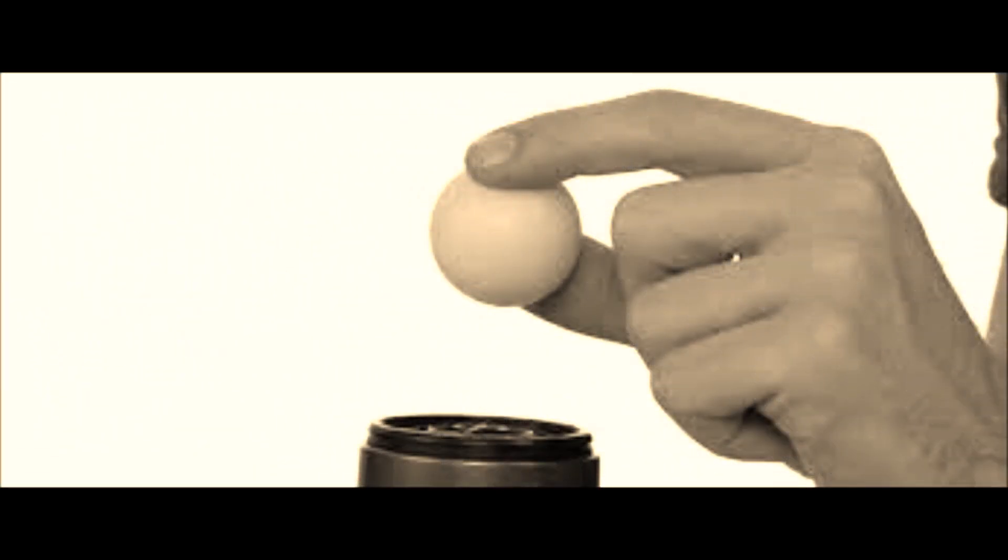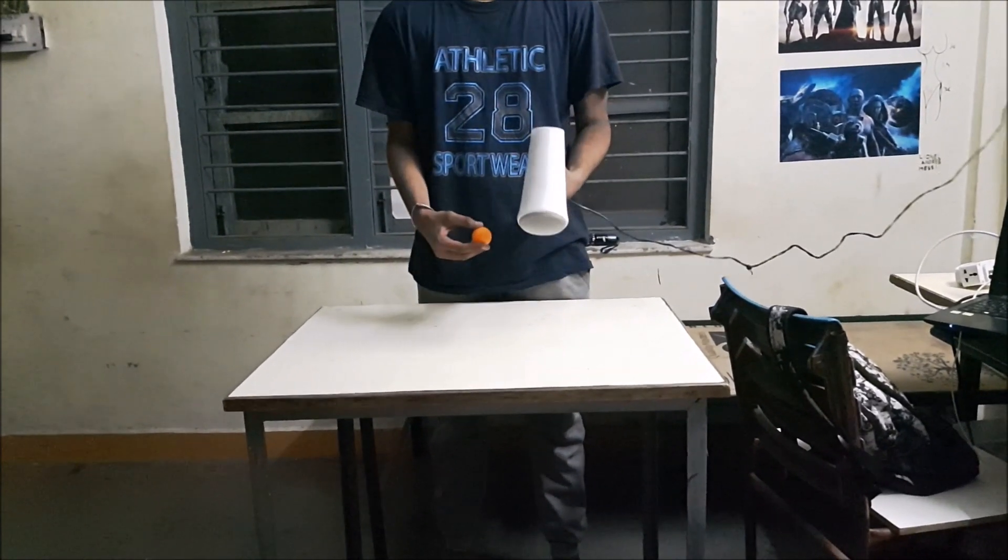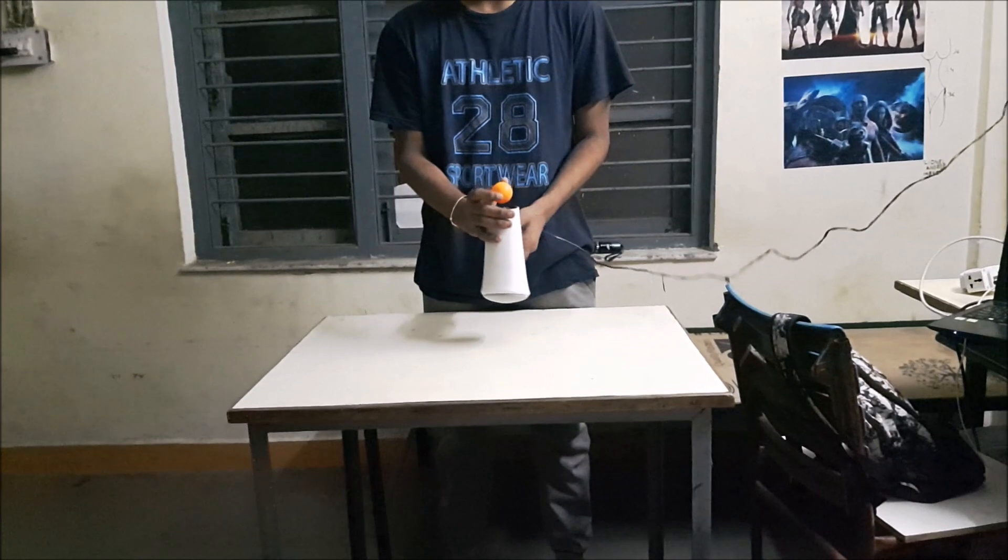Here's a simple experiment to show you how Bernoulli's principle works around us, using just a hairdryer and a ping pong ball. Place the ping pong ball on the center of the hairdryer and switch the hairdryer to the lowest setting.